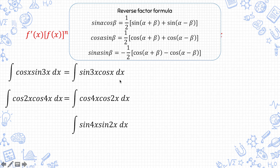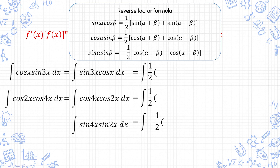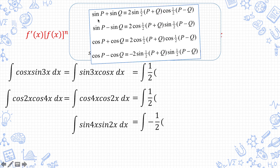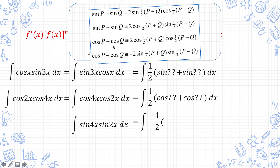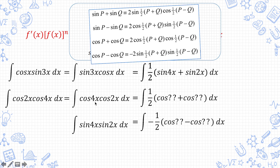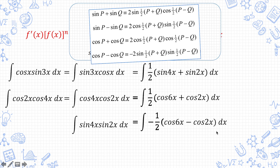When you look at the reverse factor formula, all of them require you to start with a half, except sine times sine which is negative half. You need to figure out whether it's going to be sine plus sine, cos plus cos, or cos minus cos: sine times cos gives sine plus sine; cos times cos gives cos plus cos; and sine times sine gives cos minus cos. You can just memorize the reverse factor formula, but if you're having difficulty, refer to MF26's factor formula and work backwards. Filling in the arguments is easy: the one in front is the two arguments added together, and the one behind is their difference. So for sine 3x times cos x: front is 3x plus x = 4x, behind is 3x minus x = 2x. For cos 4x times cos 2x: front is 4x plus 2x = 6x, behind is 4x minus 2x = 2x.